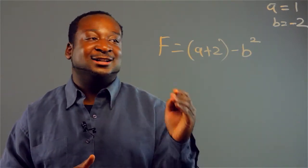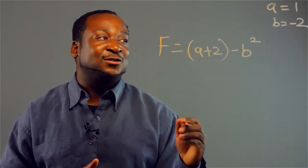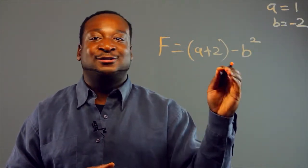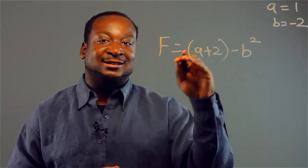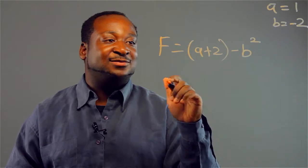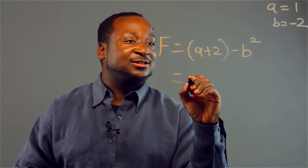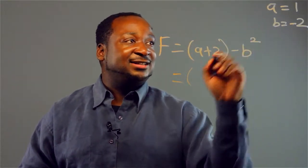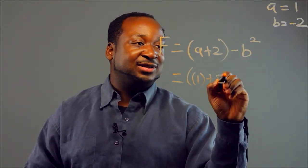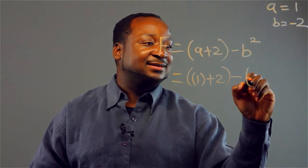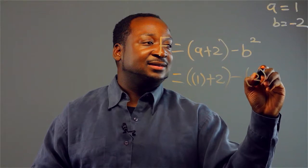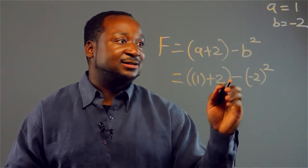Now, a great way to solve this formula — I always say, always use parentheses because parentheses will help you work everything out properly. And I'll show you here. You have A is equal to 1, so using parentheses: 1 plus 2 minus negative 2, quantity squared.